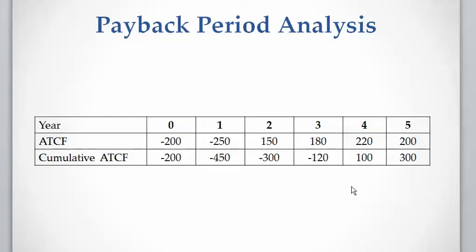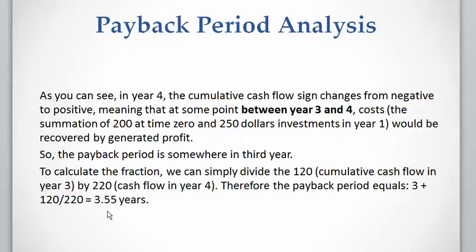The fraction is calculated as 120 divided by the difference between the cumulative cash flow at year three and the cumulative cash flow at year four, which is 220. So the payback period is 3 plus 120 divided by 220, which gives us 3.55 years.